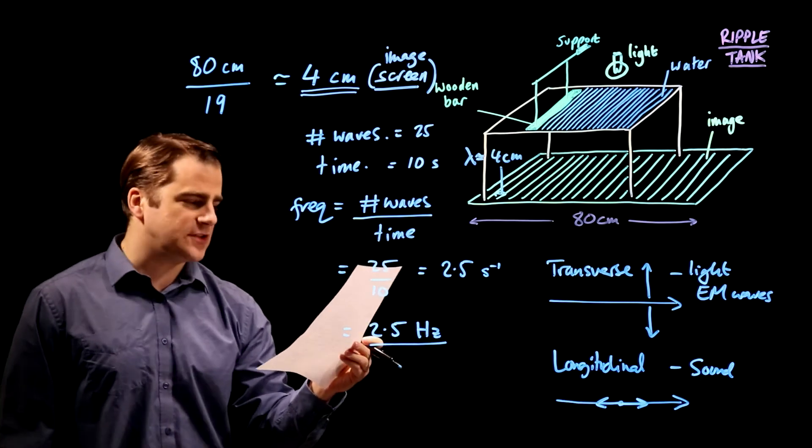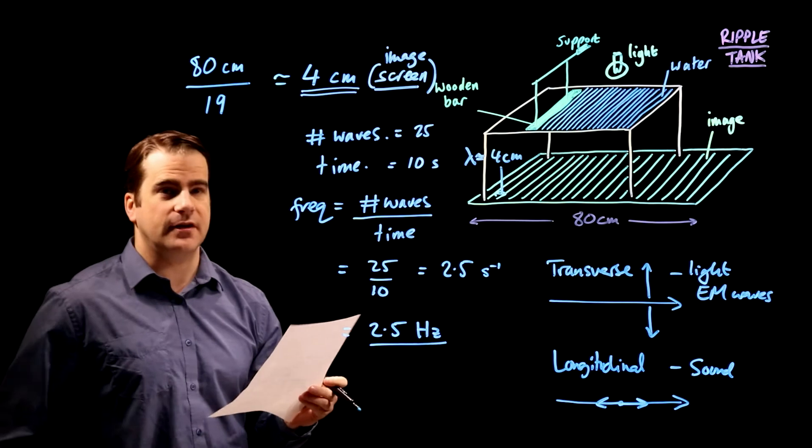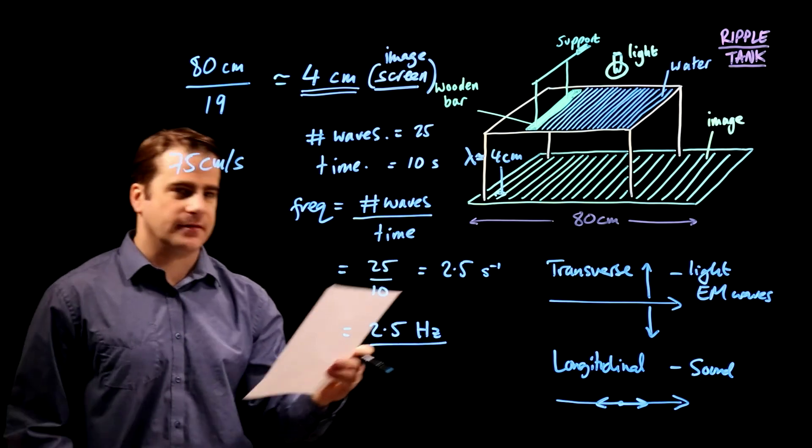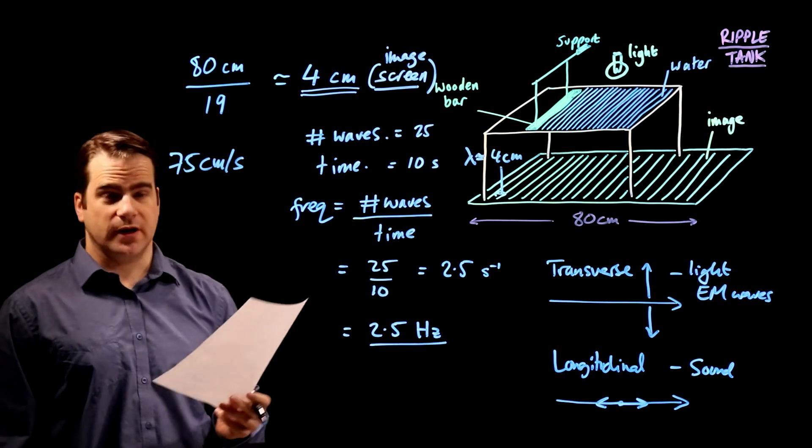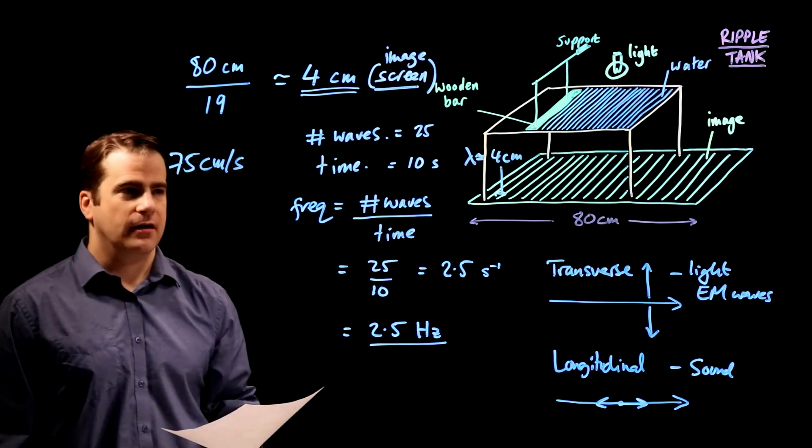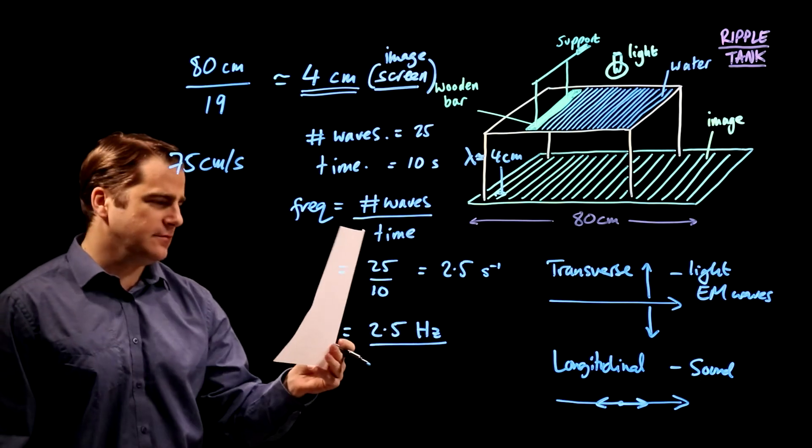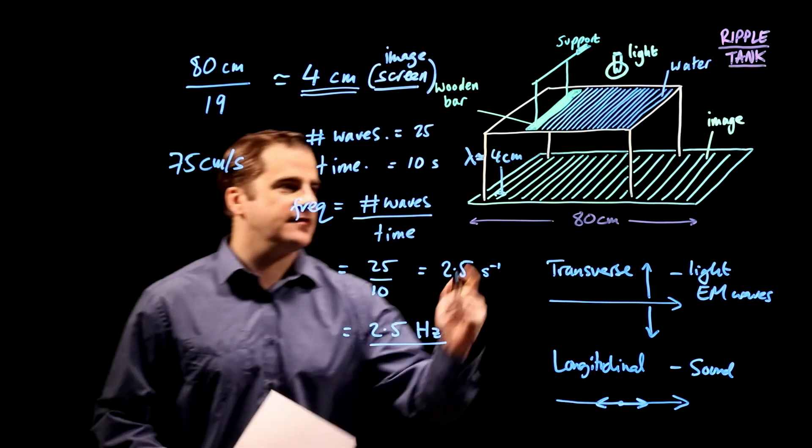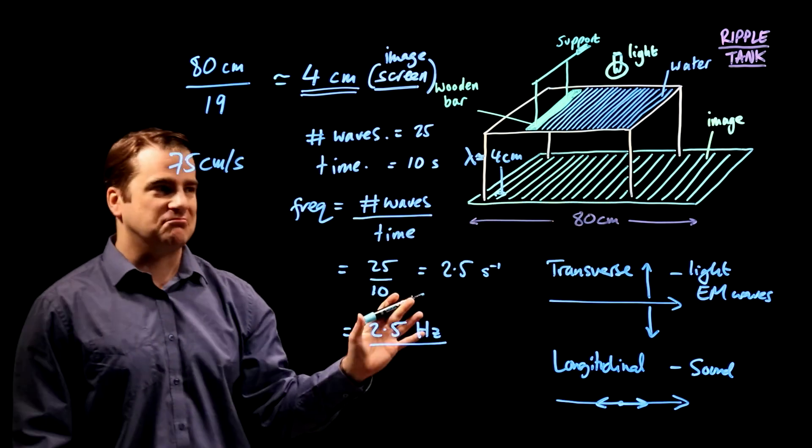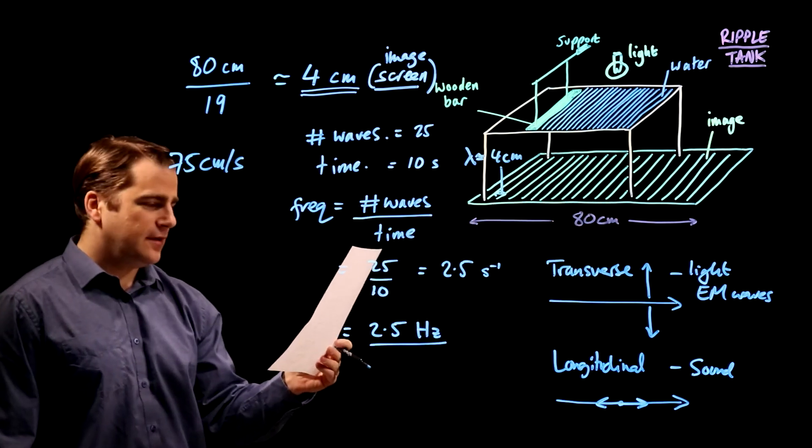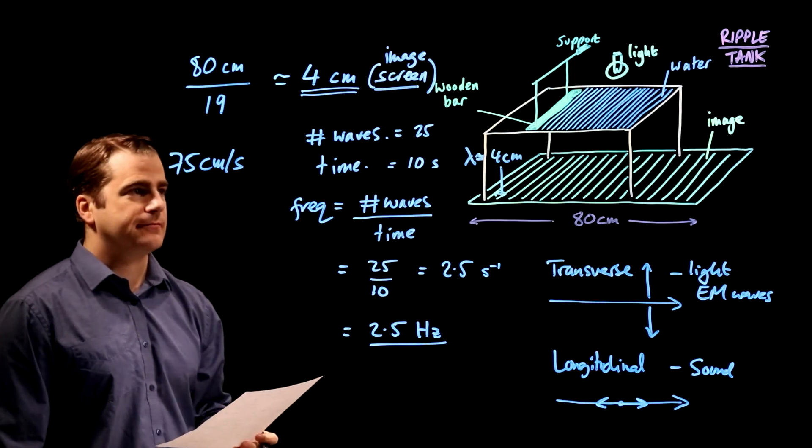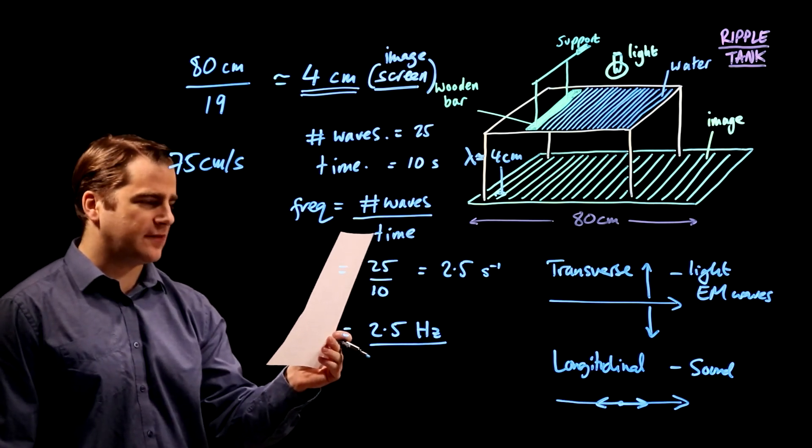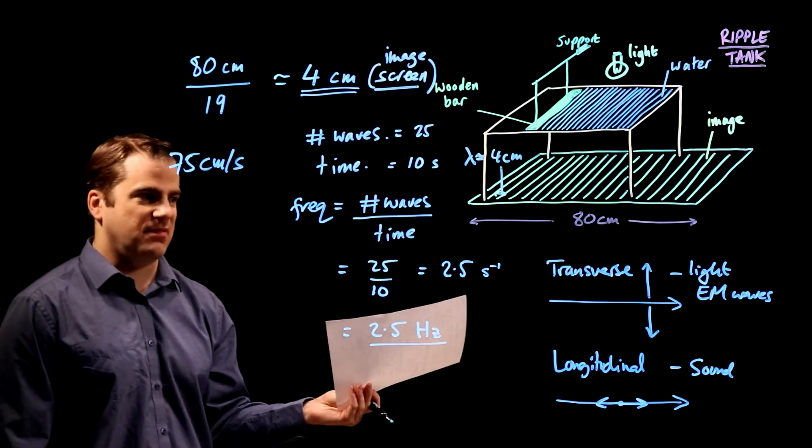The student uses the image to estimate the speed of the water wave at 75 centimetres per second. Why is this not correct? Four choices. A, the student used a ruler with millimetre markings. I don't know if that's got to do with anything. B, the light was not bright enough. The brightness of the light doesn't affect the wavelength or anything. So probably not that one. C, the student's measurement was inaccurate. Well, maybe it was inaccurate, but we don't know.